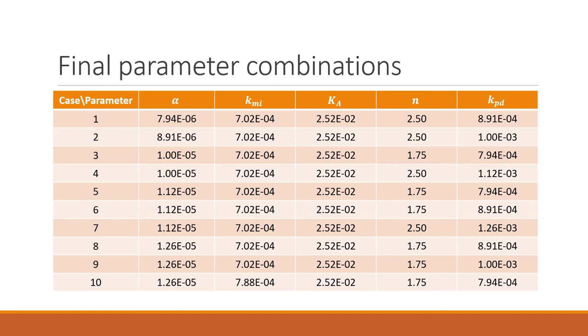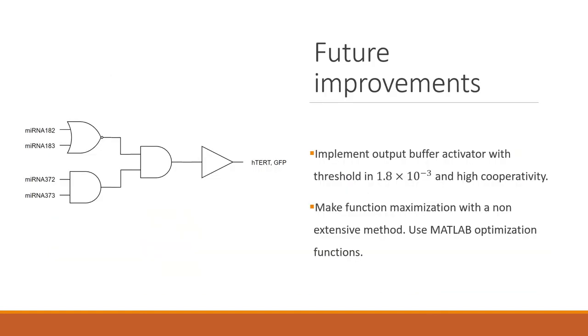For future improvements, we note that we could add a buffer stage here after the second AND condition that would be an activator with a threshold of 1.8 times 10 to the minus 3 and a high cooperativity. That would give us a very digital behavior in the output functions that we saw. Finally, we could make a gain function maximization using a non-extensive method. We tried all the combinations possible, but we could use MATLAB optimization functions that would do that for us.